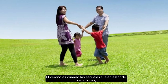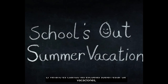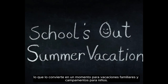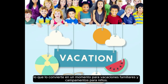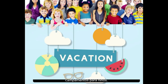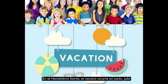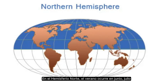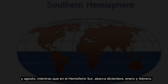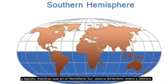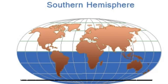Summer is when schools are usually on vacation, making it a time for family vacations and camps for children. In the Northern Hemisphere, summer occurs in June, July, and August, while in the Southern Hemisphere it spans December, January, and February.